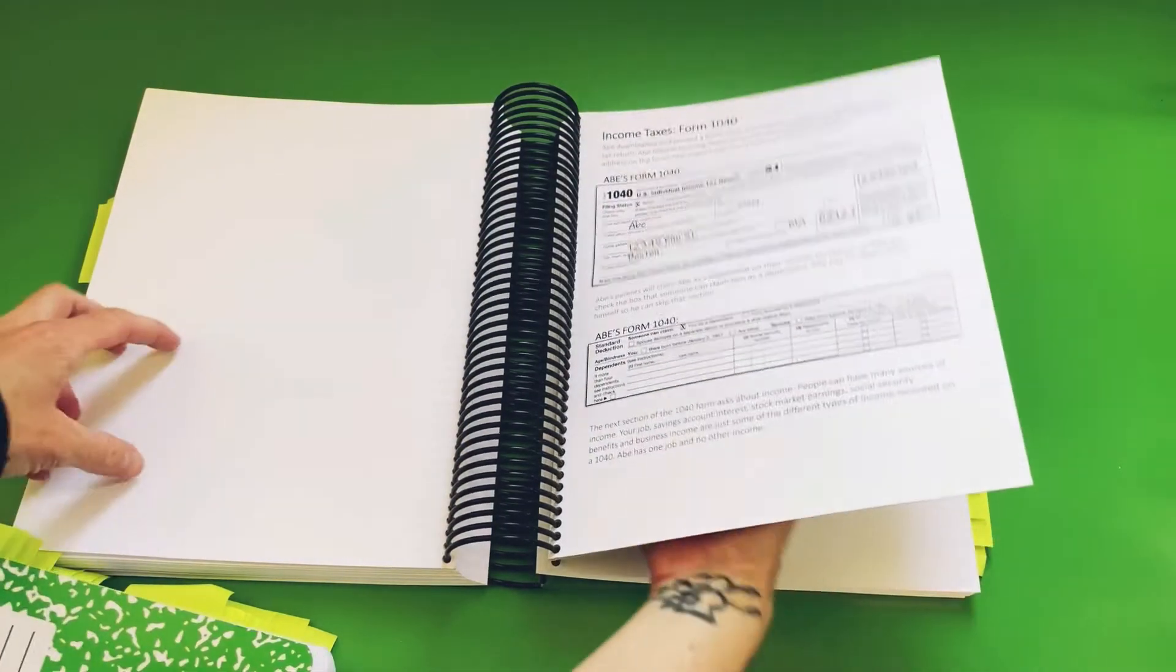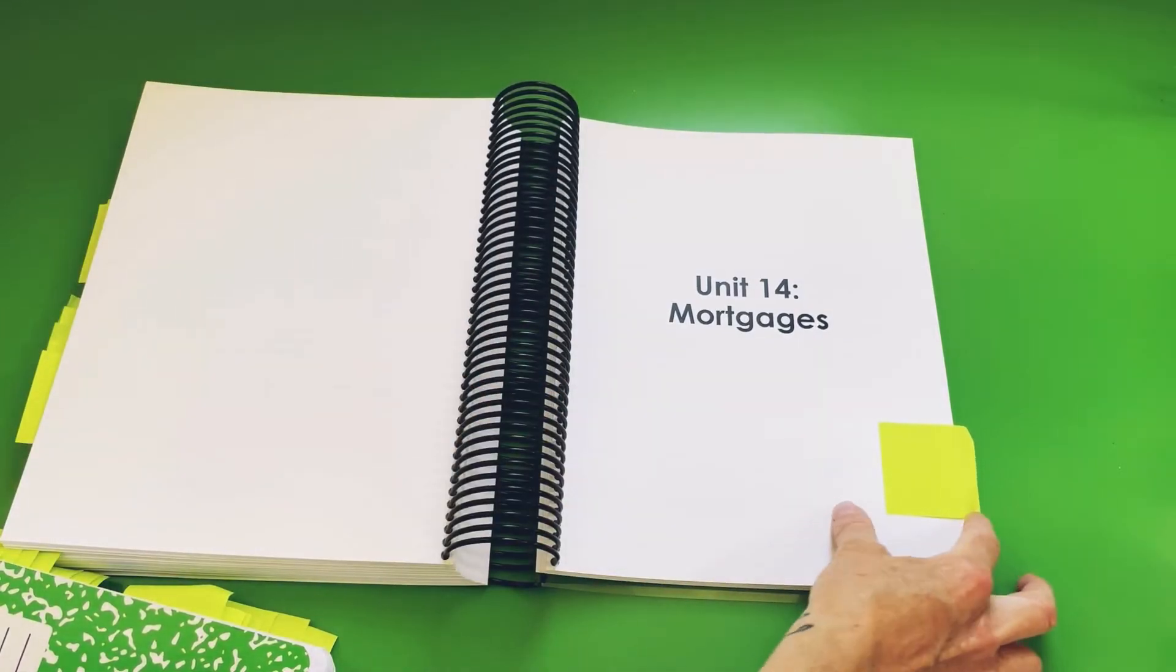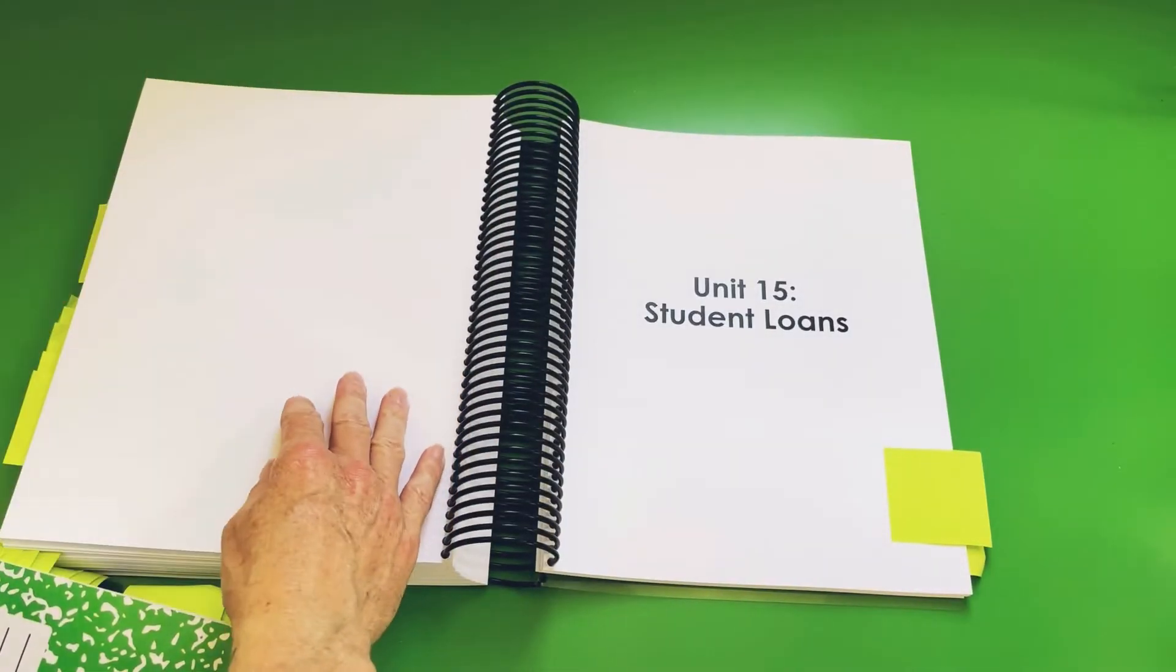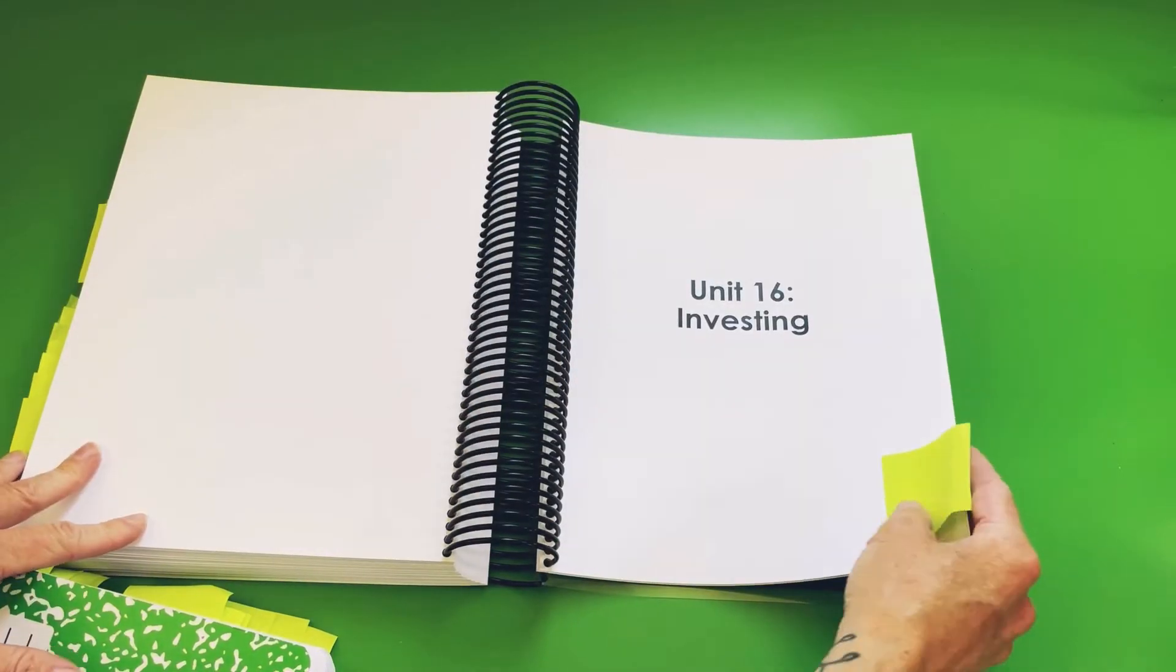And next unit, we're almost done here. Car loans, mortgages, student loans. That was a thick chapter. And investing.